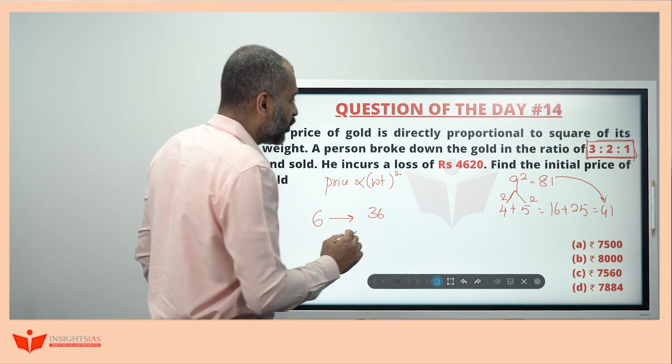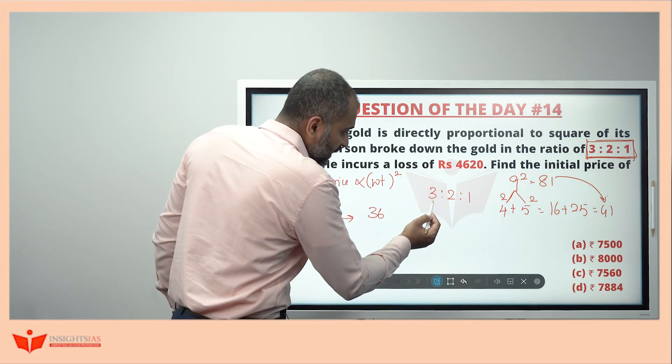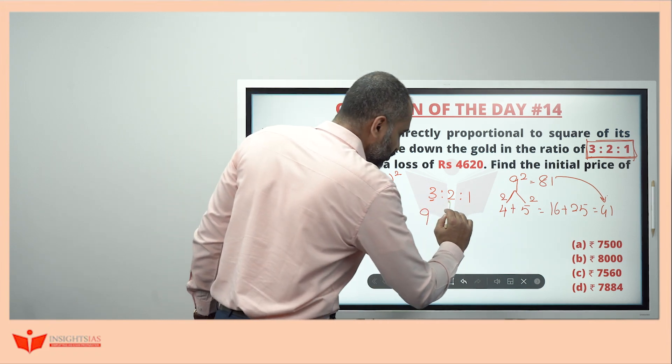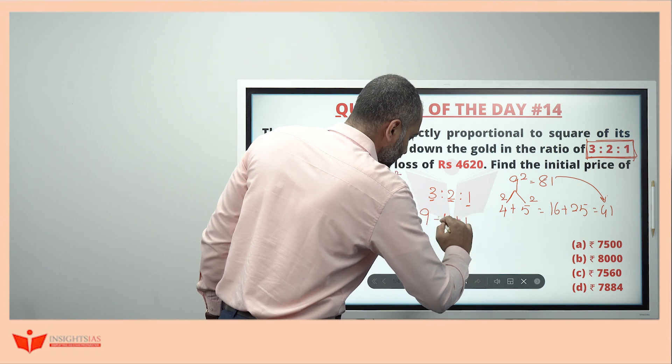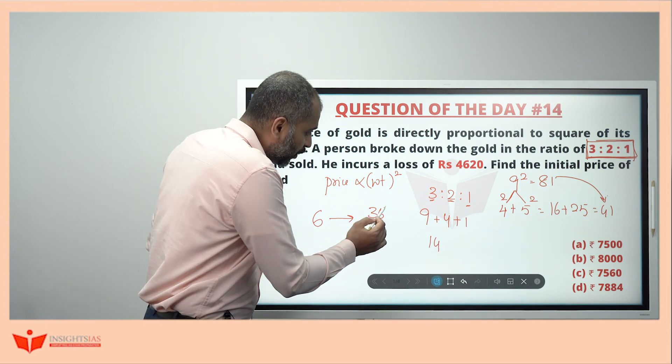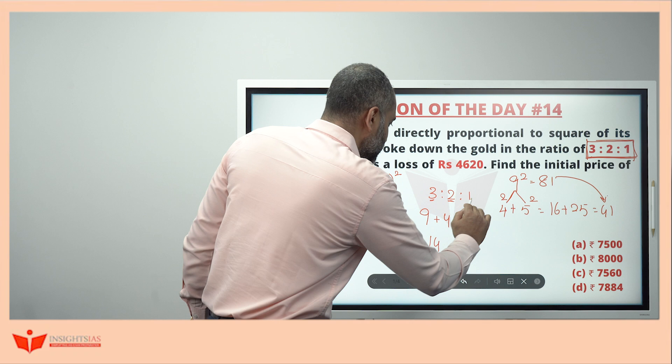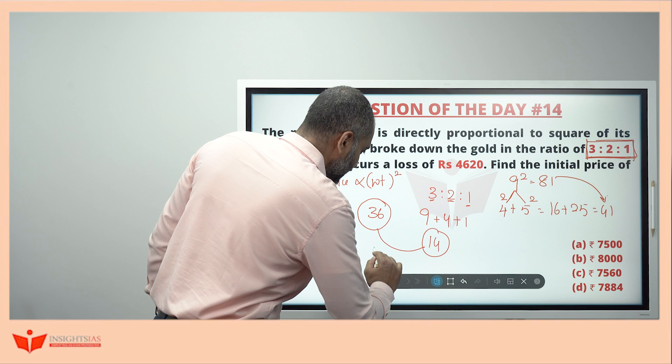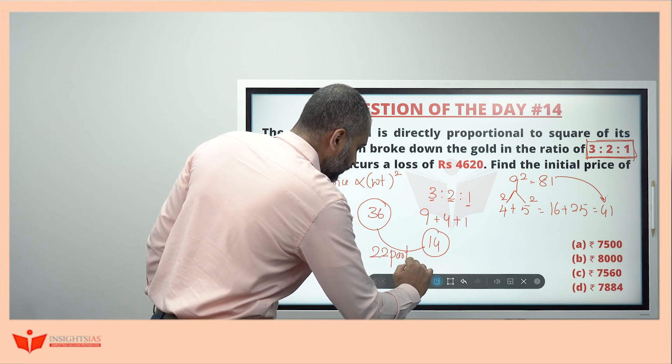Now, he has broken this in the ratio 3:2:1. So for these 3 parts, he'll get 9, the price. For these 2 parts, he'll get 4. For this 1 part, he'll get 1. So totally this becomes 14. If it is unbroken, then its value was 36. If it is broken in this ratio and sold, its value is 14. So it is depreciated by how much here? 22 parts or units.